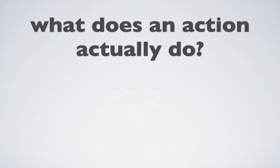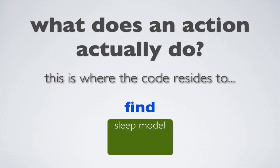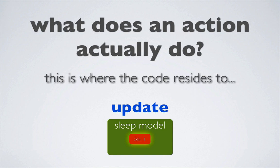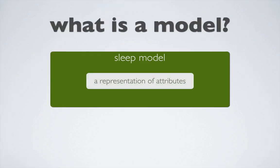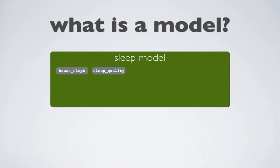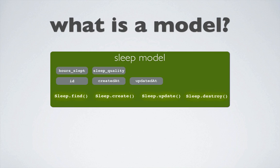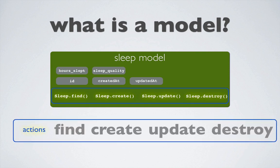So what does an action actually do? This is where the code resides to find one or more instances of the model, to create a new instance, to update an existing instance, or to delete an existing instance. A model is a representation of the attributes that describe the data your API will be managing. Our sleep model consists of hours slept and sleep quality, and Sails automatically adds an ID, created_at, and updated_at attribute. The sleep model is an object, so in addition to attributes like hours slept, it also has methods like find, create, update, and destroy — these are the methods called within our actions. Don't be confused by the fact that actions and model methods share the same name; the action name relates to the ultimate model method the action will use.